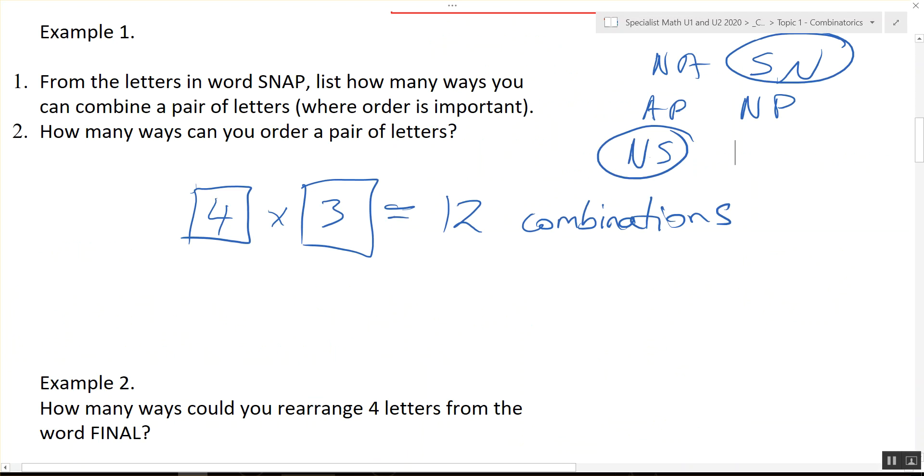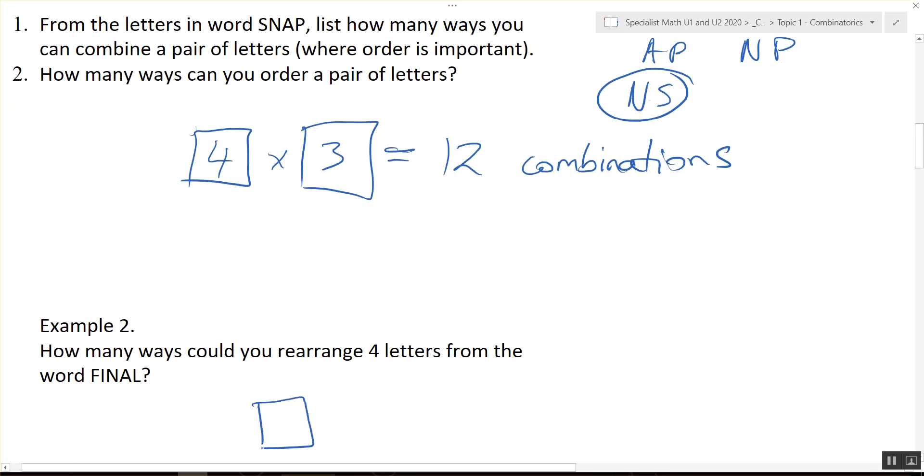The first letter can be any of those five letters. So there's five possibilities for the first letter. It wants us to do four letters in total. So we've used one letter, there's four left. Now there's three. Now there's two. So 20 times three is 60. There's 120 different words that we could make using those letters.